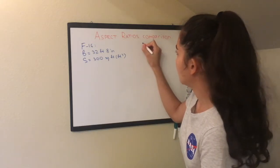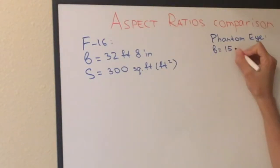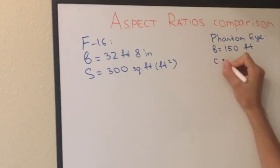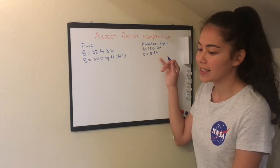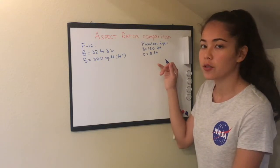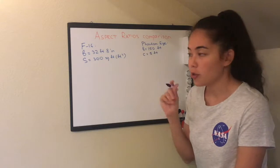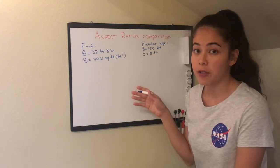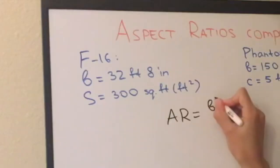For Phantom Eye we have a wingspan of 150 feet and a cord of 5 feet. We approximate this number because the wing is not completely rectangular if you see the picture. So in order to calculate the aspect ratio let's remember the formula from the previous video which is wingspan squared divided by wing area.